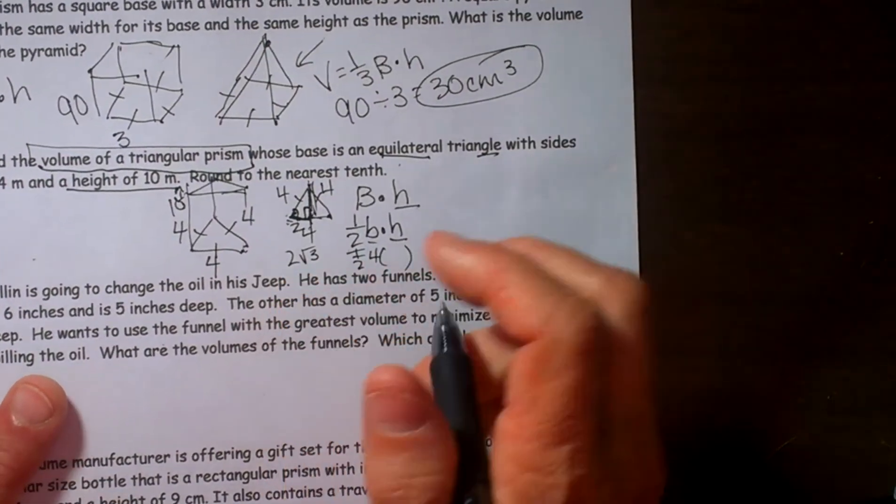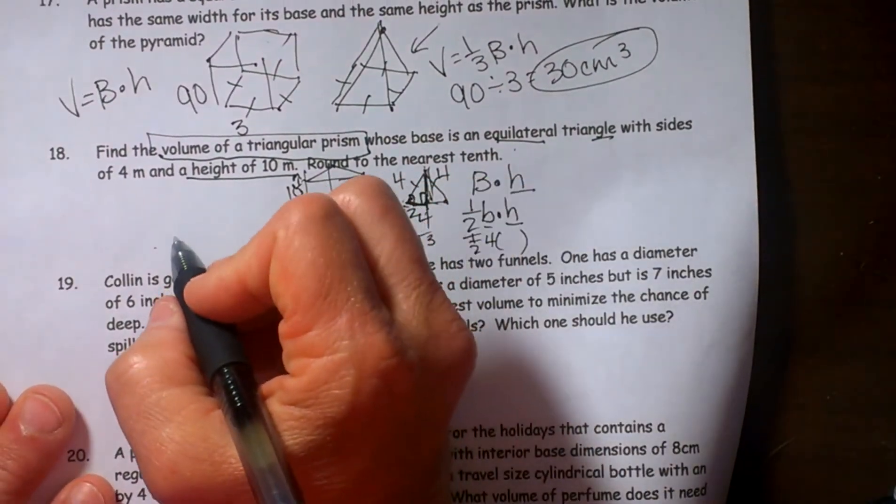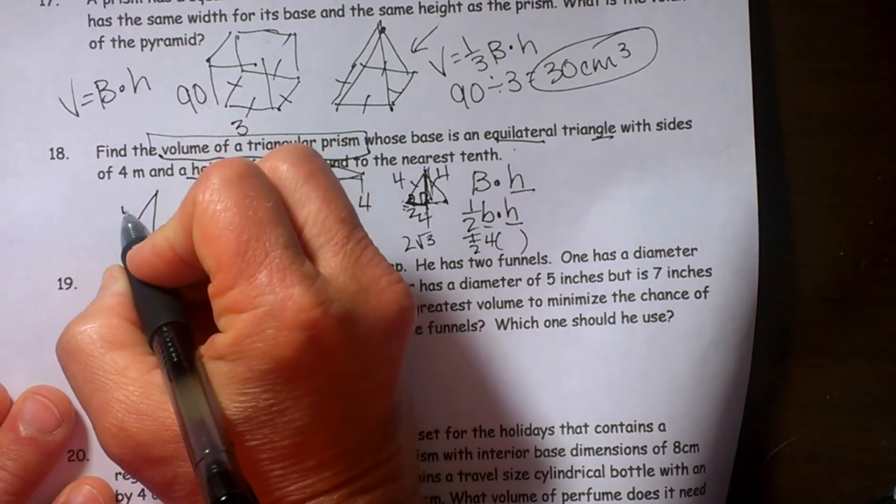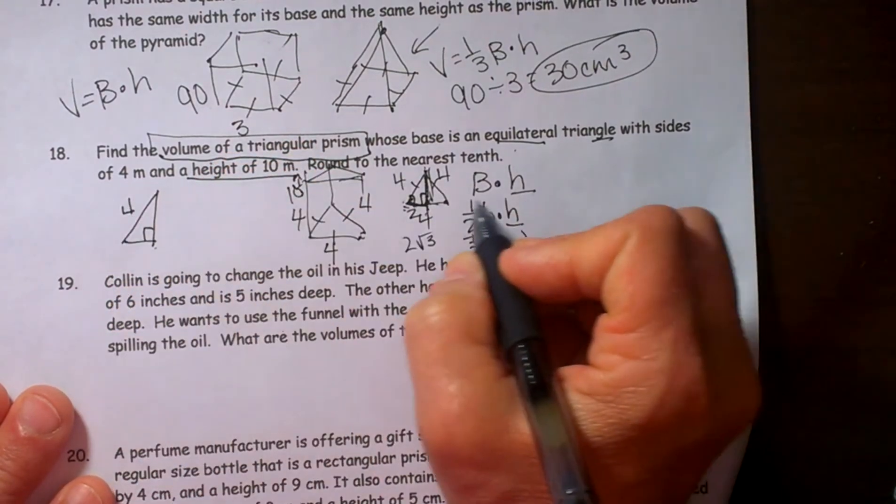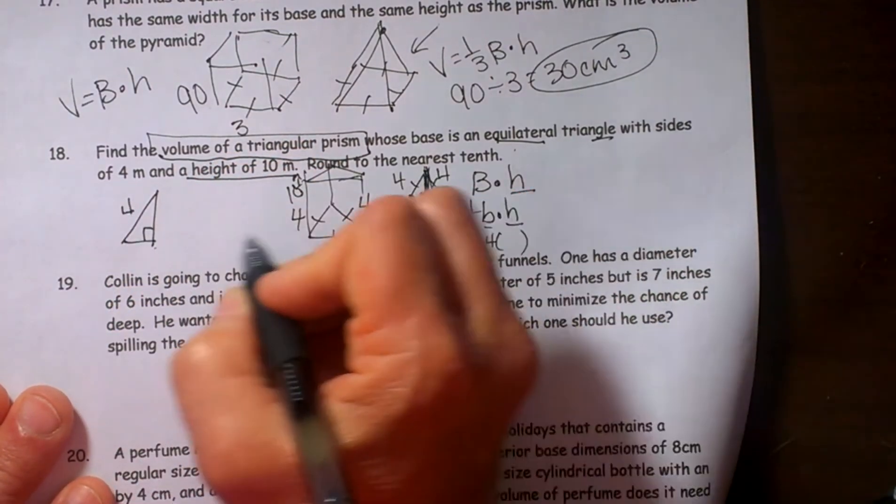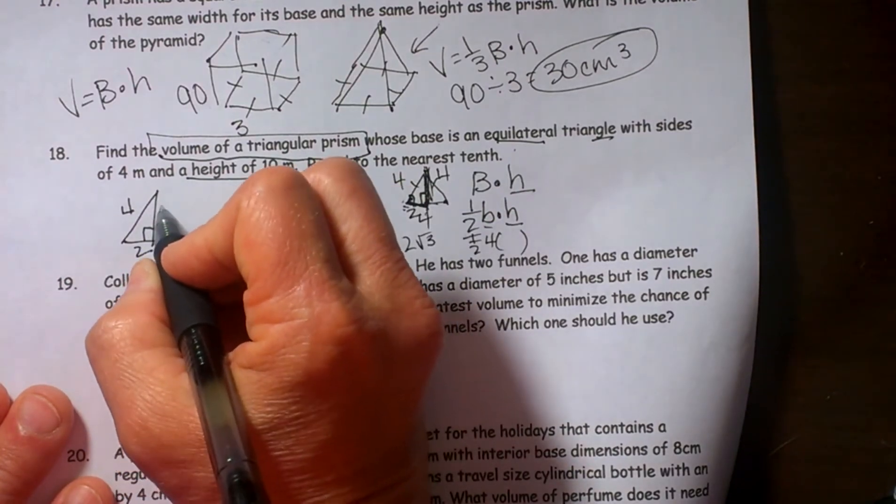If you didn't know that, you can also use the Pythagorean theorem. So let's go over here and use the Pythagorean theorem. We know this side is four. We know this side is two. We need to know this side, the height.